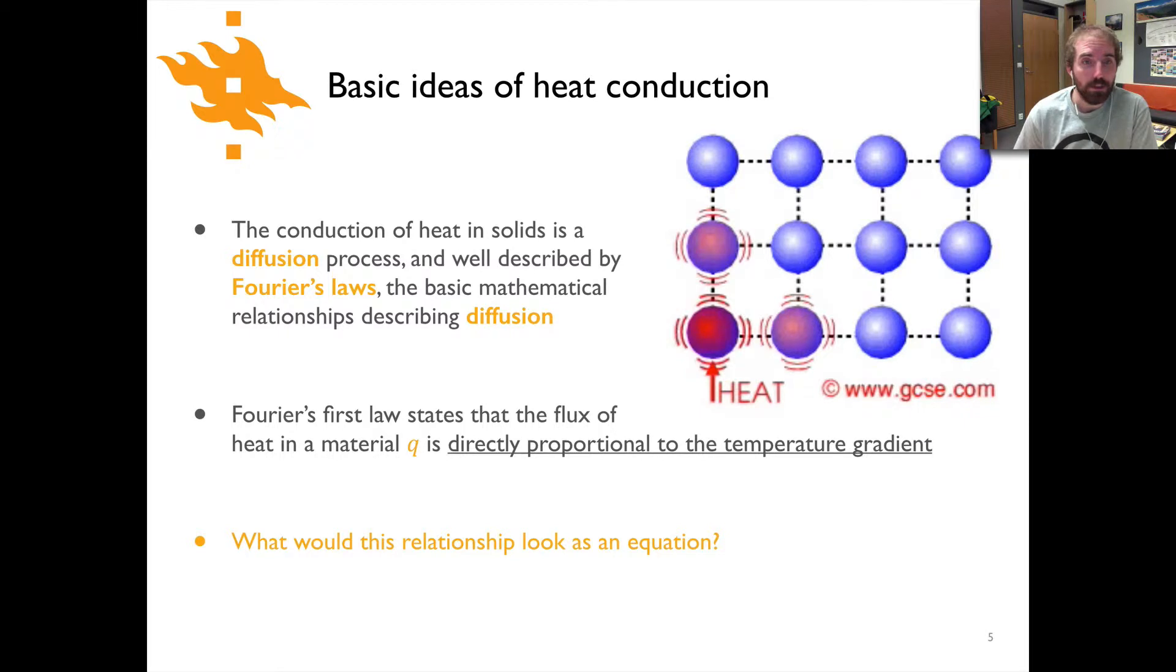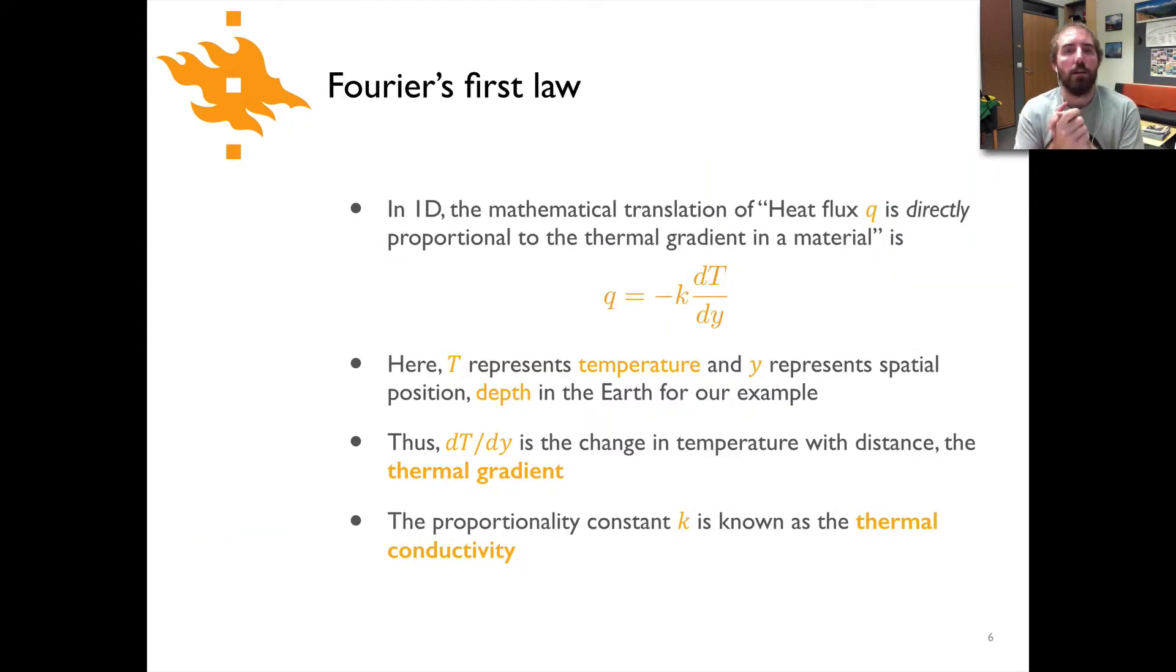Well let's see, shall we? In one dimension, the translation into mathematical terms of heat flux is directly proportional to the temperature gradient in a material is something that looks like this. We would have Q, our heat flux term, equals is directly proportional to here is the thermal gradient dT/dy, and in this case we have a term out here in front that's K, and that's where this proportionality thing comes in. It's directly proportional or linearly proportional. Of course there's a constant then out there in front of dT/dy.